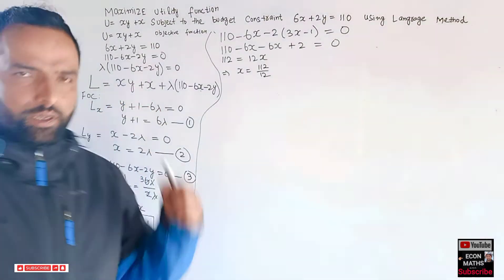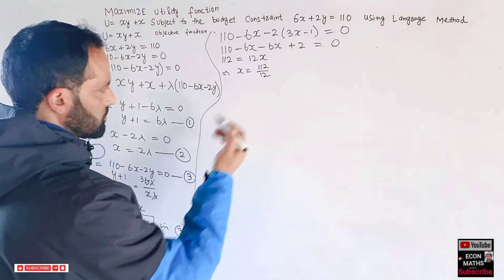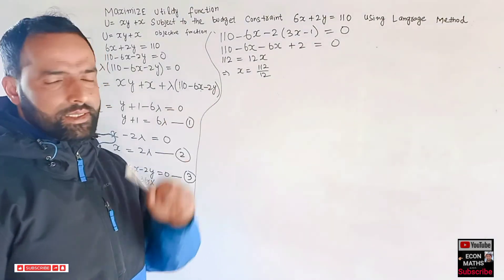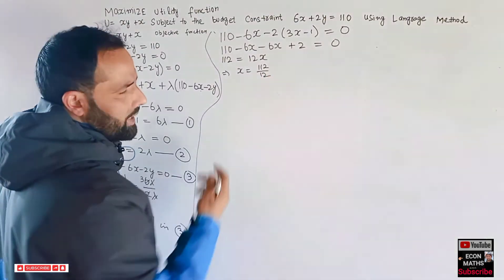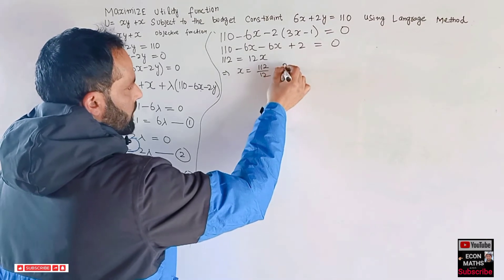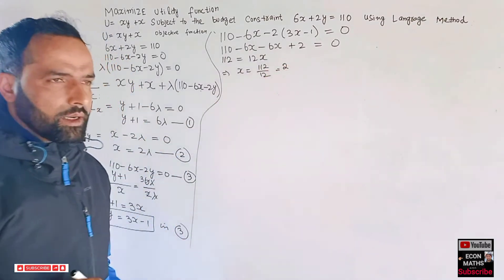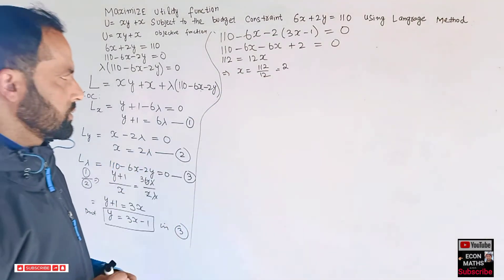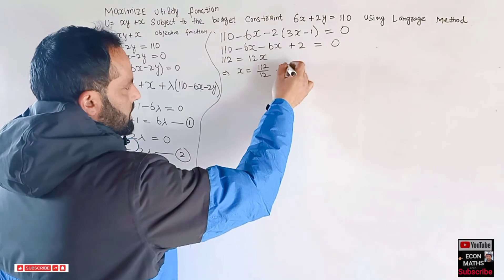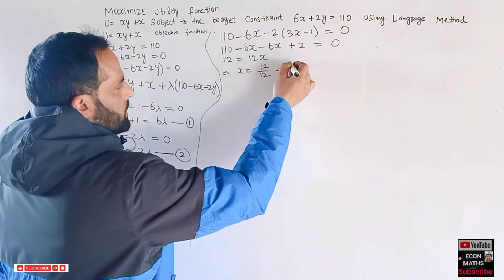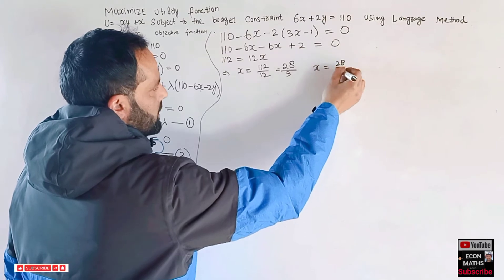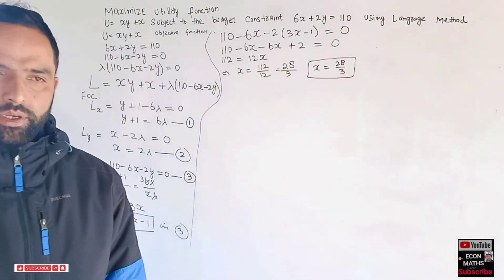We can simplify 112/12 by dividing both numerator and denominator by 4: 112/4 = 28 and 12/4 = 3. So the optimal value of x = 28/3.